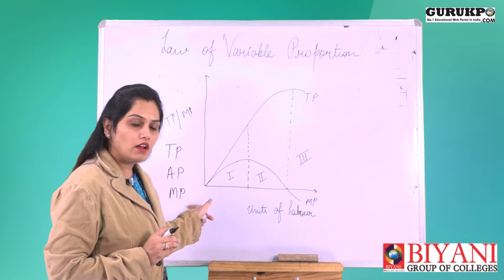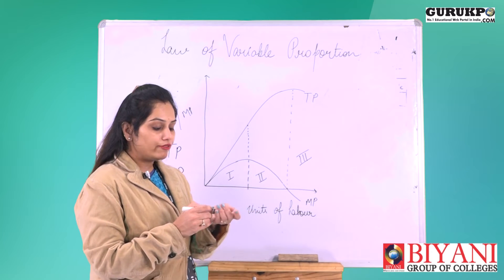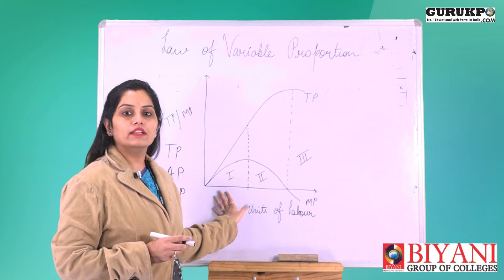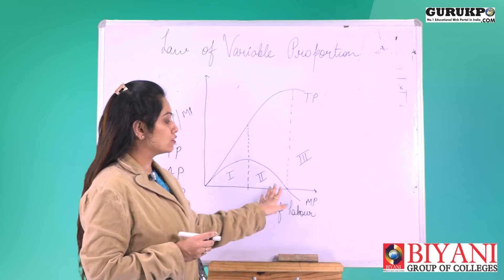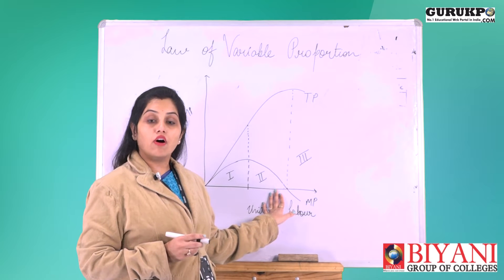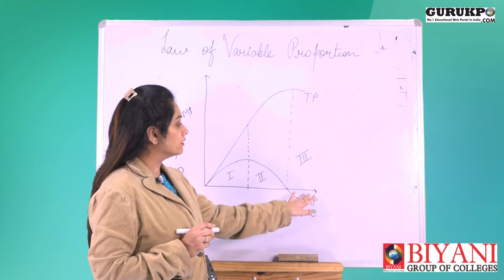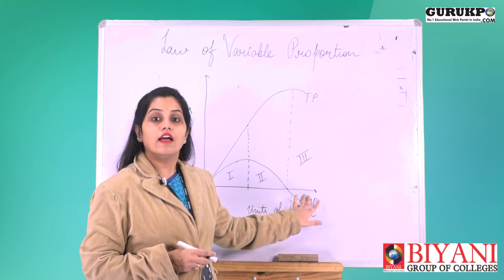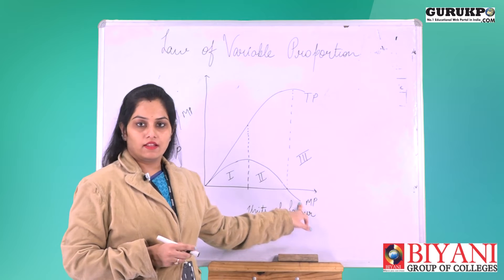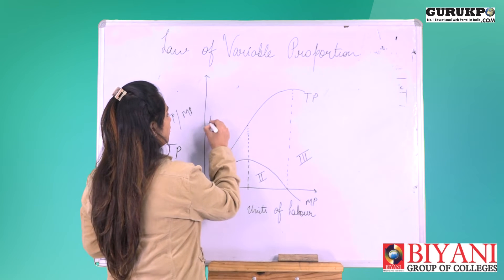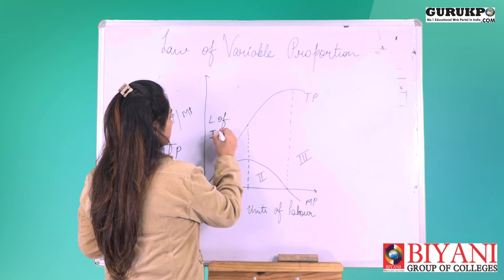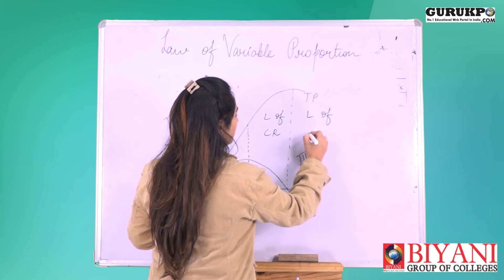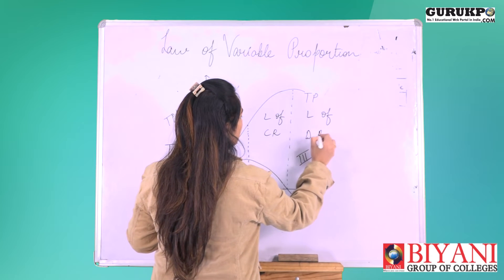The law of variable proportion is divided into three stages. Stage one is the law of increasing returns to factor. Stage two is the law of constant returns to factor or decreasing returns to factor. Stage three is the law of diminishing returns, also called negative returns to factor, as marginal product becomes negative in this stage.